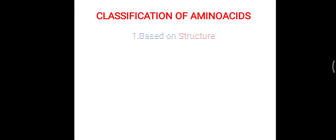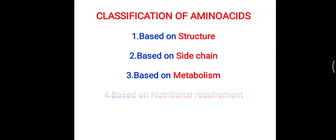Hello friends, here is one more classification of amino acids. We have already seen classification based on structure (aliphatic, aromatic, heterocyclic, derived), side chain (polar, non-polar), and metabolism (ketogenic, glucogenic, and both). Now we will look at classification based on nutritional requirement.